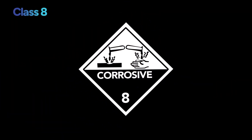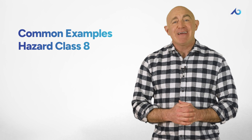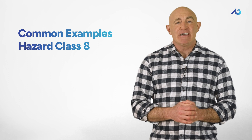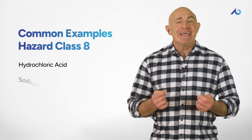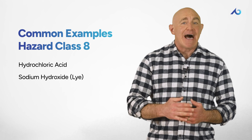Class 8 includes all substances that have the ability to corrode. OSHA defines a corrosive as any material that causes destruction to living tissue chemically at the site of contact. Some common examples of hazard class eight include hydrochloric acid and sodium hydroxide, or lye.